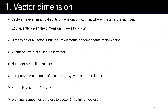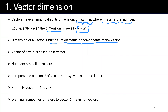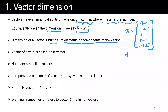Next, we talk about vector dimensions. Vectors have a length called their dimension. Dimension of vector x is equal to n, meaning n is a natural number showing the number of elements in that vector. Equivalently, x belongs to the n-dimensional real space. For example, vector x equals 4, minus 2, 1, 0, minus 12 — the dimension of this vector is 5.